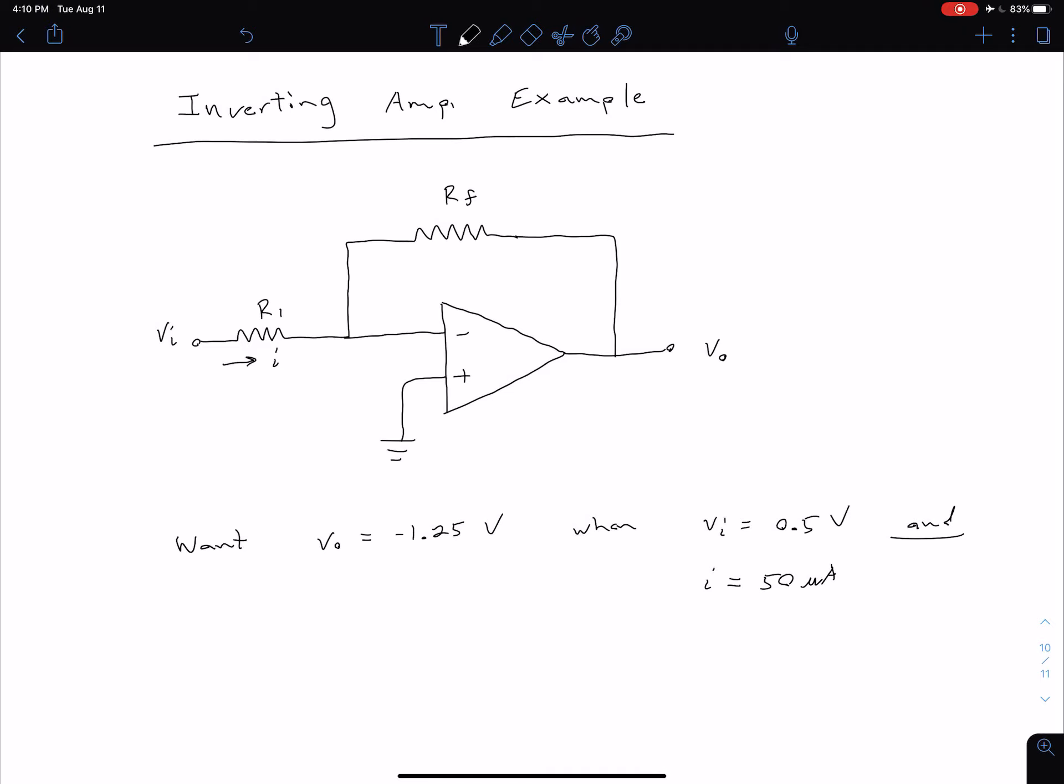And so up here in our circuit, we see the current I is defined through resistor R1. And so recall with our prefixes, microamps is times 10 to the minus 6, so we have 50 times 10 to the minus 6 amps.